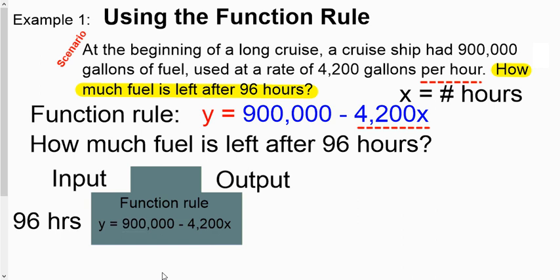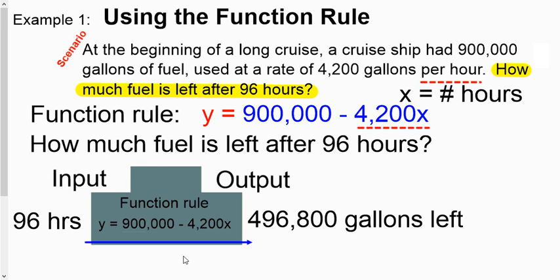So 96 is the number of hours. That is your X. So you would basically just say 900,000 minus 4,200 times 96 and out spits the result of 496,800 gallons. So there's your answer. That's how many gallons of fuel is left.